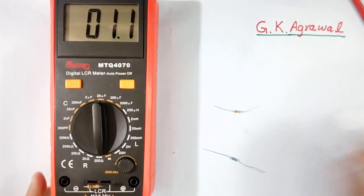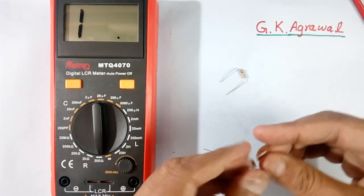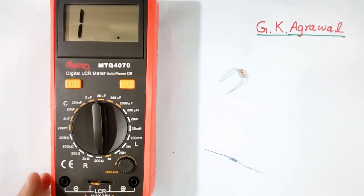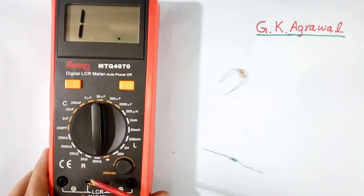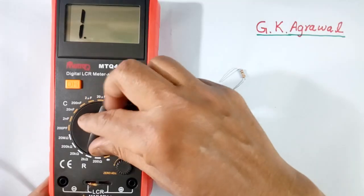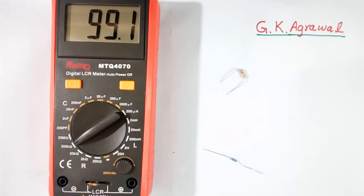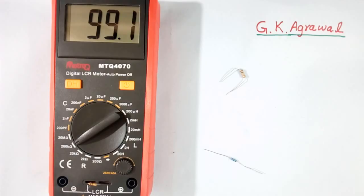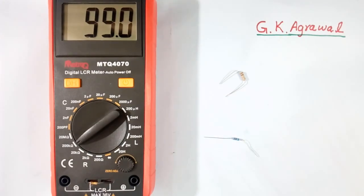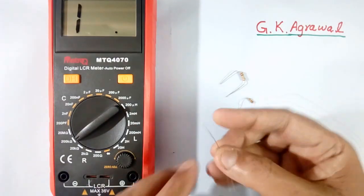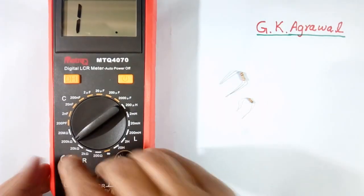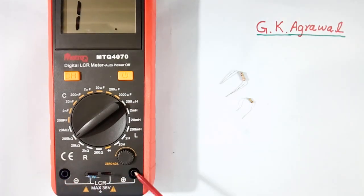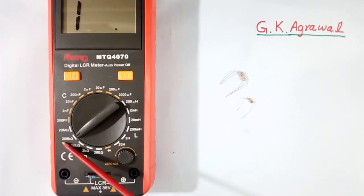Now we will measure the value of this resistor. I have connected it, but it is coming 1, which means the value of this resistor is more than 200 ohm. Now I will increase the scale till we get the correct value. Now it is giving the correct value: 99.1 kilo ohm, because I have kept the scale at 200 kilo ohm. Now we will measure the value of this resistor which has a very high value. It is showing 1, which means the value is more than 200 kilo ohm. So I have to change the scale to a higher value.